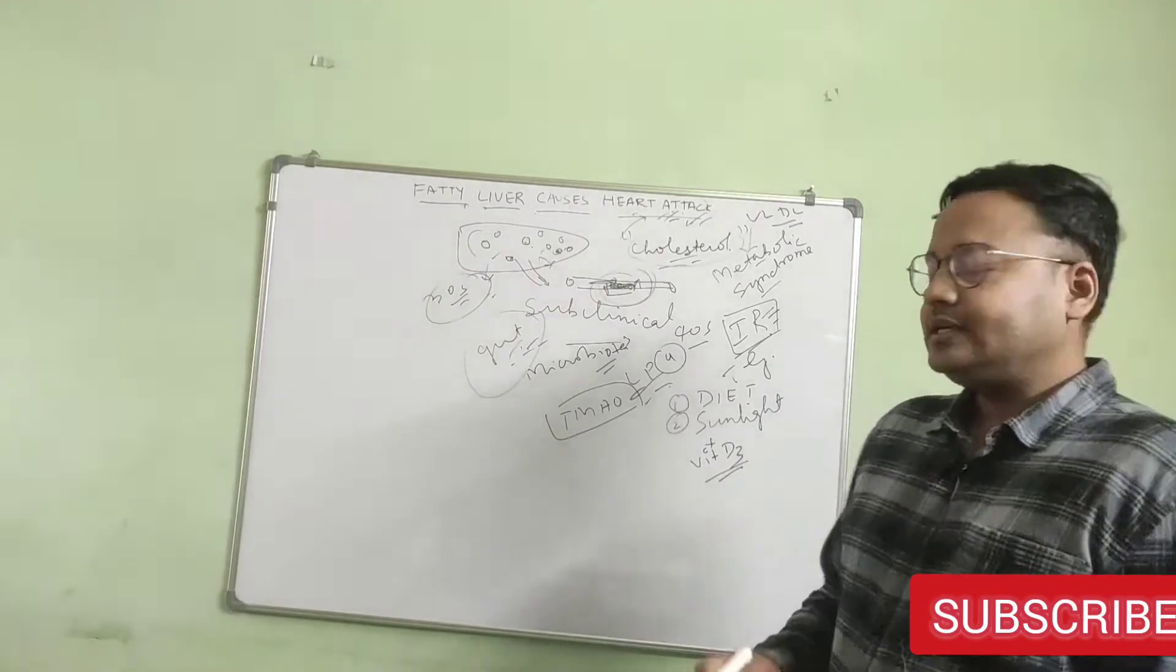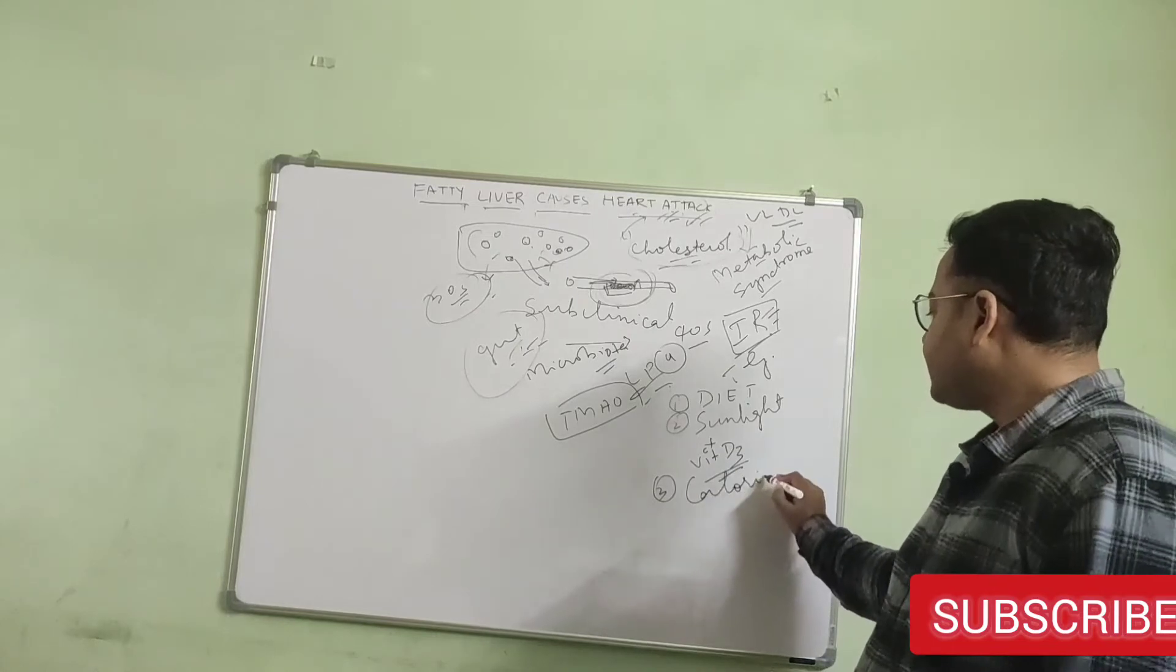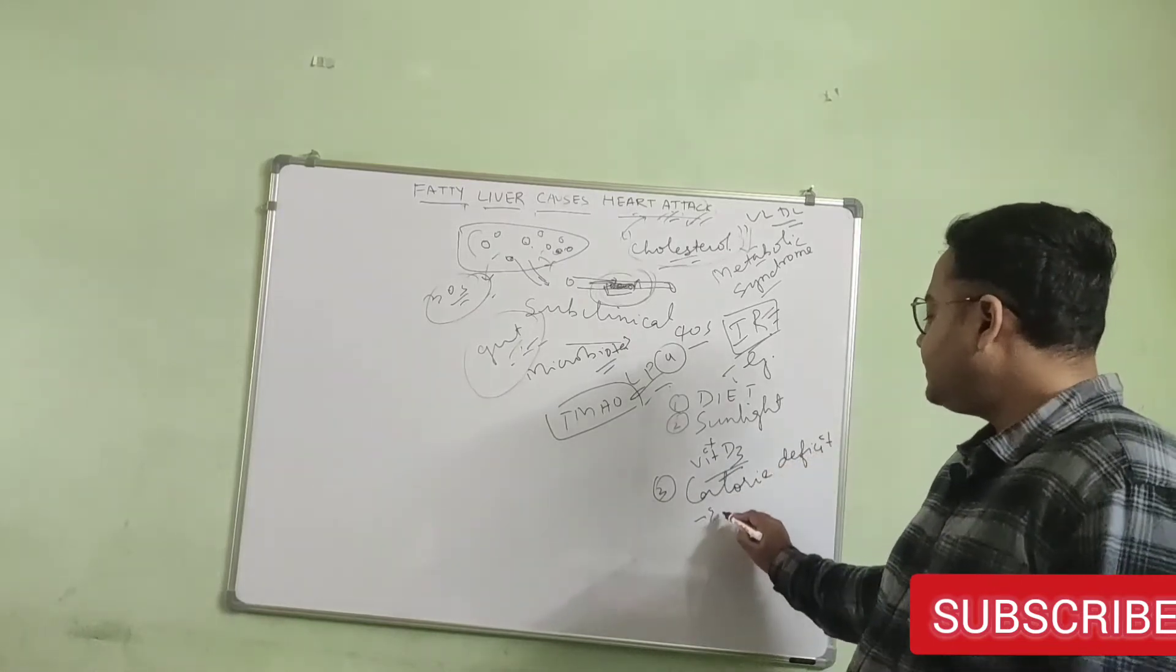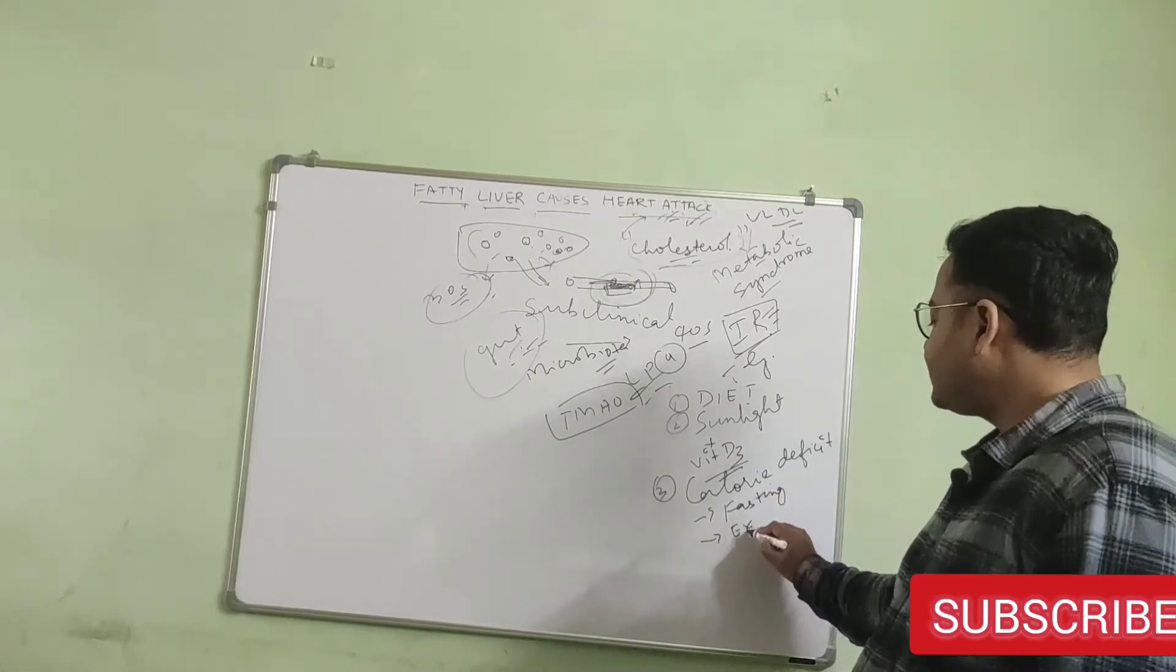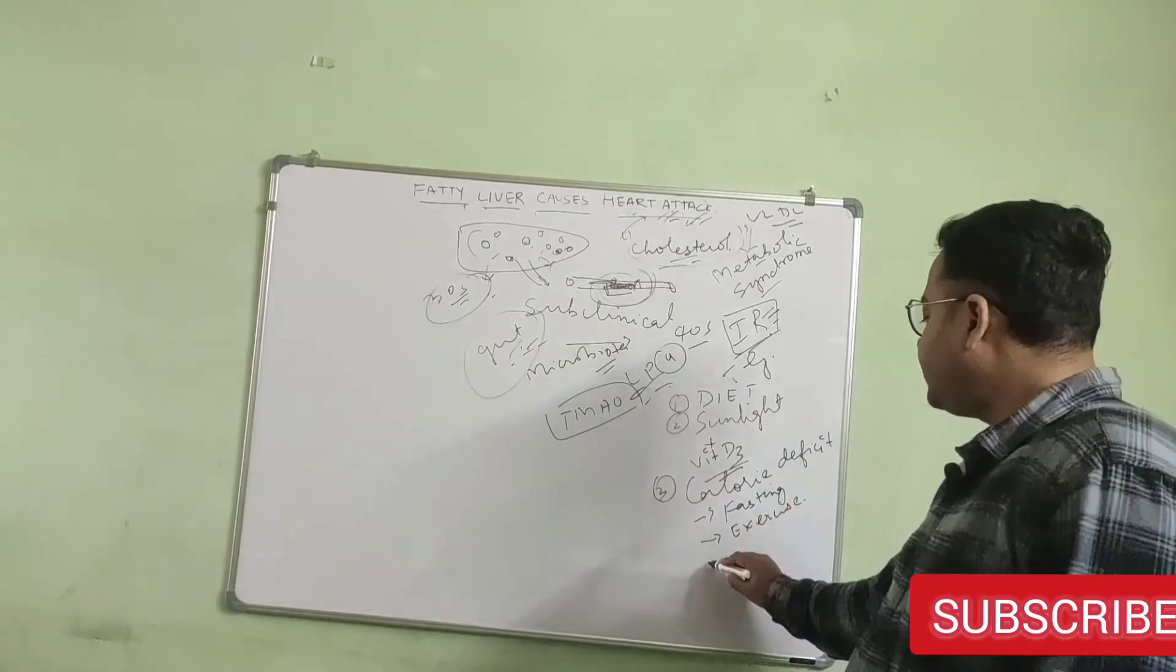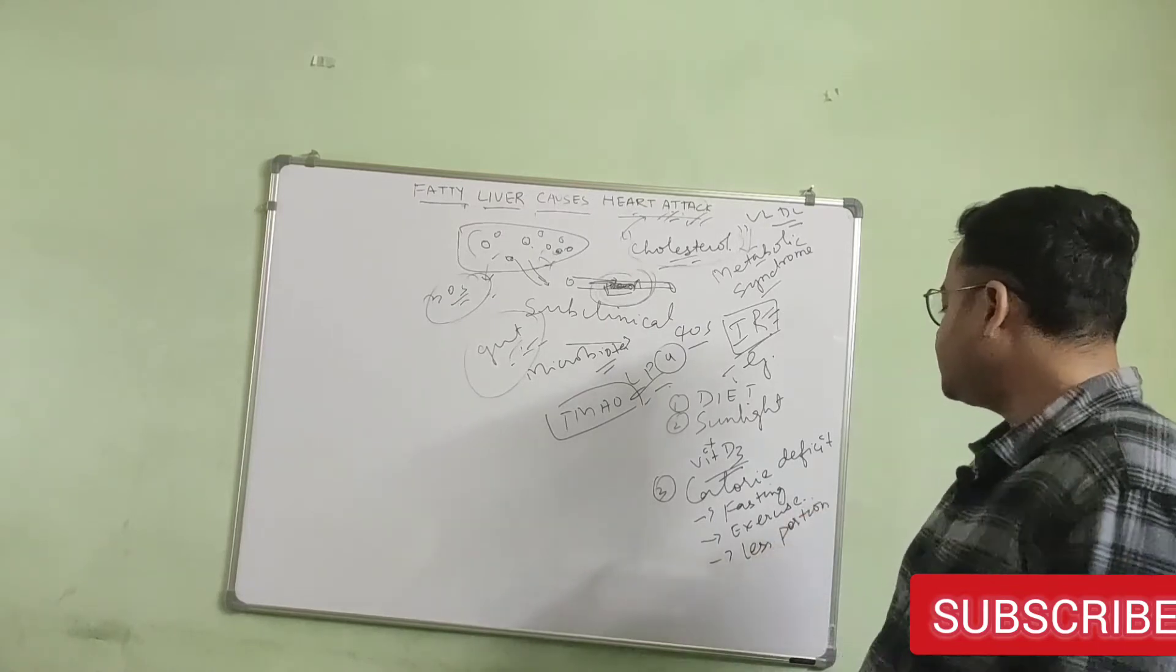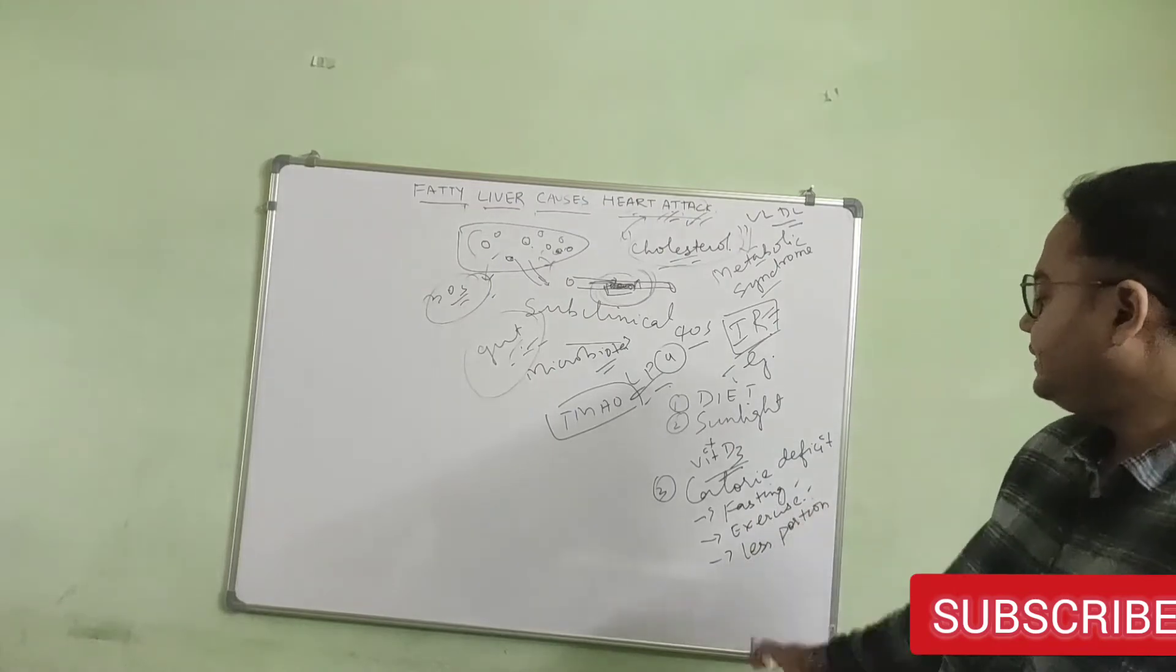Next important thing is being in a state of calorie deficit. This can be achieved by either fasting, exercise, and eating less portion. Portion control is also going to help you. So you can achieve calorie deficit by these things.